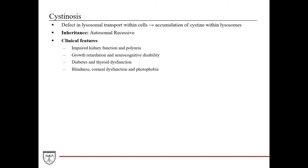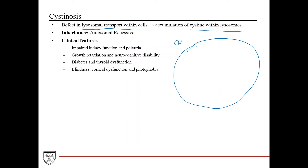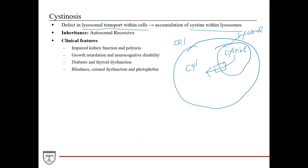Cystinosis is a slightly different disorder. It involves a defect in lysosomal transport within cells, causing accumulation of cystine within lysosomes. Protein is endocytosed into the cell, the vesicle fuses with the lysosome breaking the protein down to its amino acids including cystine, and normally a transporter within the lysosomal membrane exports cystine into the cytosol. In these patients, a genetic mutation makes this transporter defective, so cystine cannot be exported and accumulates within the lysosome.